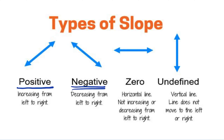If the graph is horizontal, the slope is zero. And if the graph is a vertical line, the slope is undefined or no slope.